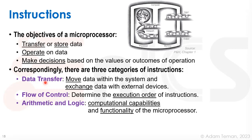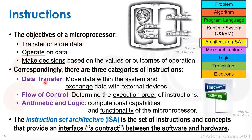The instruction set architecture is the set of instructions and concepts that provide an interface between the software and hardware — it's the contract between the programmer and the hardware designer. If we take our stack of where we are in computers, we start from the bottom with physics, electrons, devices, logic gates, and the micro architecture. From the top we have a problem, an algorithm, a programming language, and a system to run it. The thing that connects both sides is the instruction set architecture.